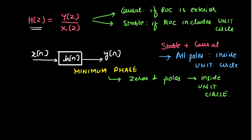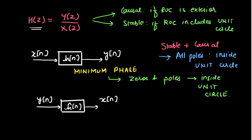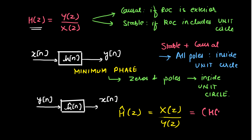Consider another system that takes Y(n) as input and produces X(n) as output. Such a system is known as the inverse of the original system. Consider another system whose impulse response is Ĥ(n), such that if we have Y(n) as input we obtain X(n) as output. Taking the Z-transform, Ĥ(z) equals X(z) divided by Y(z), which from the original equation is simply 1/H(z), or H(z) to the power minus one. So these two systems are inverses of each other.